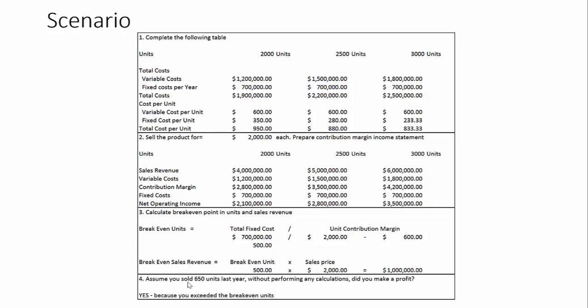The question asks: if you sold 650 units last year, without performing any calculations, would you have made a profit? The answer is yes, because you exceeded the break-even units. We know we need 500 units to break even, so anything above 500 units will yield a profit.